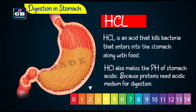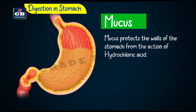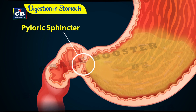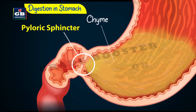HCl is a strong acid and can cause damage to the stomach walls. A thick layer of mucus protects the walls of the stomach from the action of HCl. At the end of the stomach, there is a muscular sphincter called the pyloric sphincter, which releases the partly digested food slowly into the small intestine.